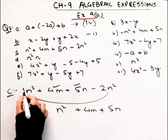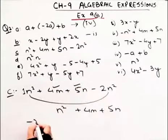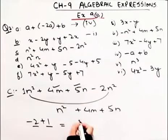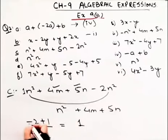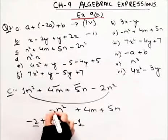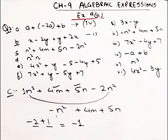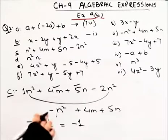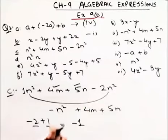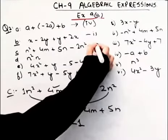For the n² terms: here we have –2 and here we have +1. Minus 2 plus 1 is 1 with a negative sign. So this is –1n² or –n². The answer is –n² + 4m + 5n, so the answer here is the second part.